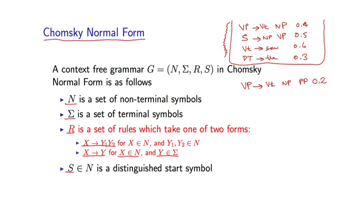The awkward thing about this rule is that it has three non-terminals on the right-hand side, and so it violates this restriction on the rules. The solution is essentially to convert this to a sequence of rules in Chomsky normal form. Let me show you how this works.